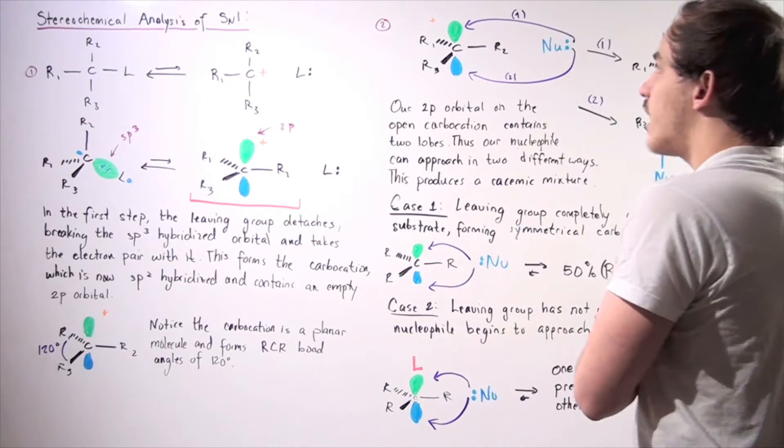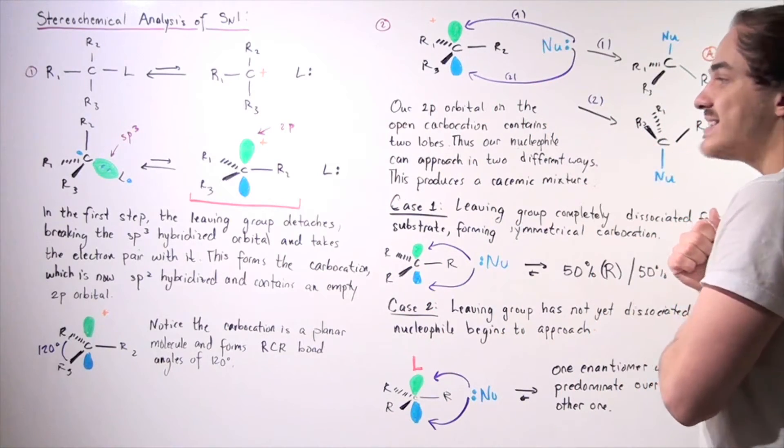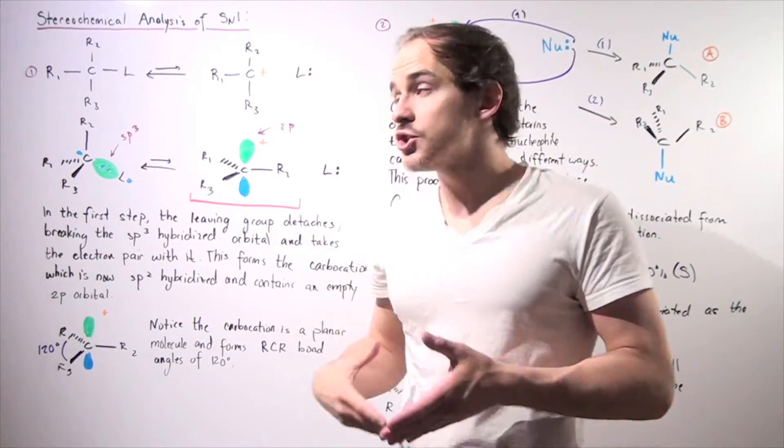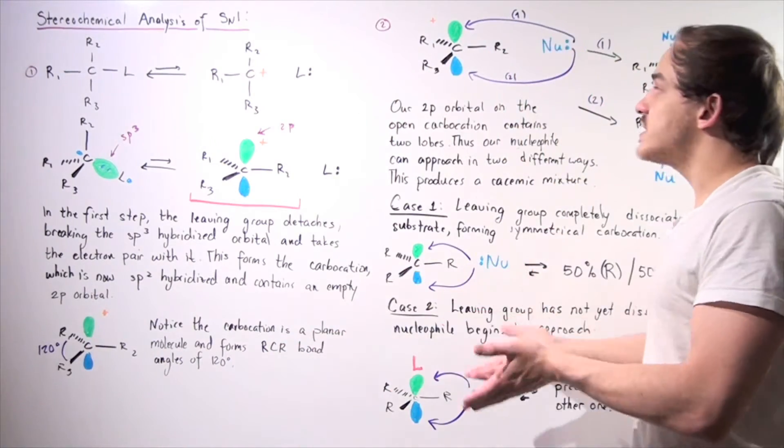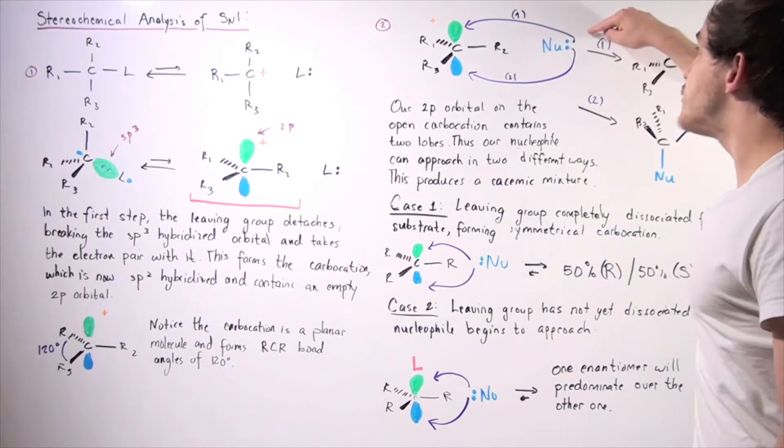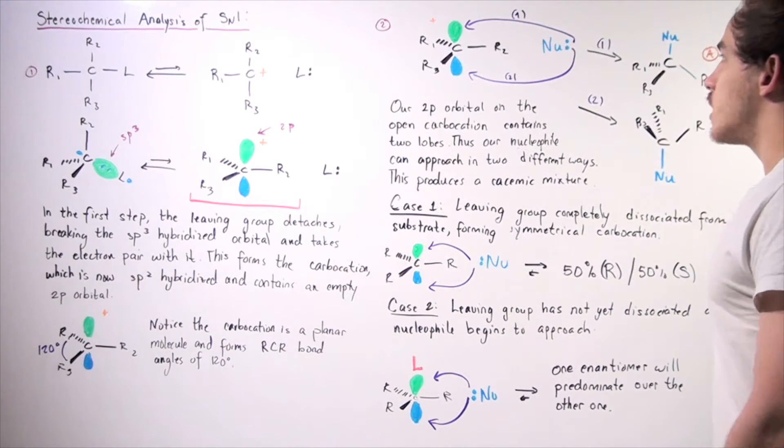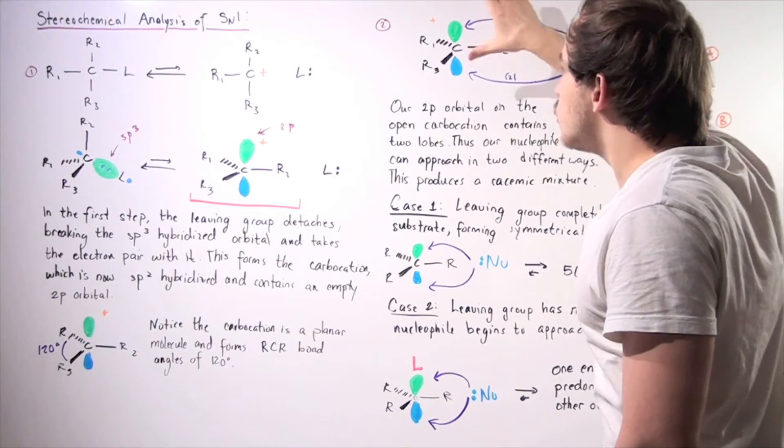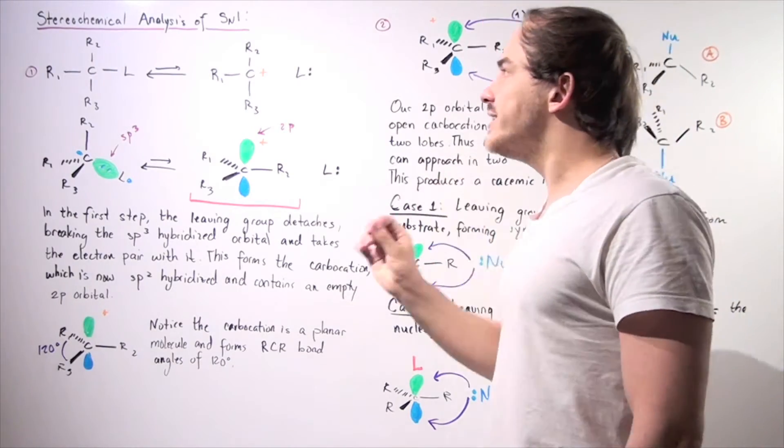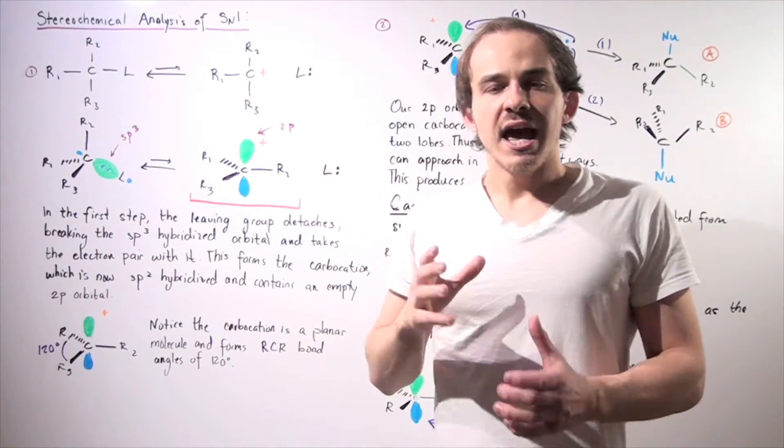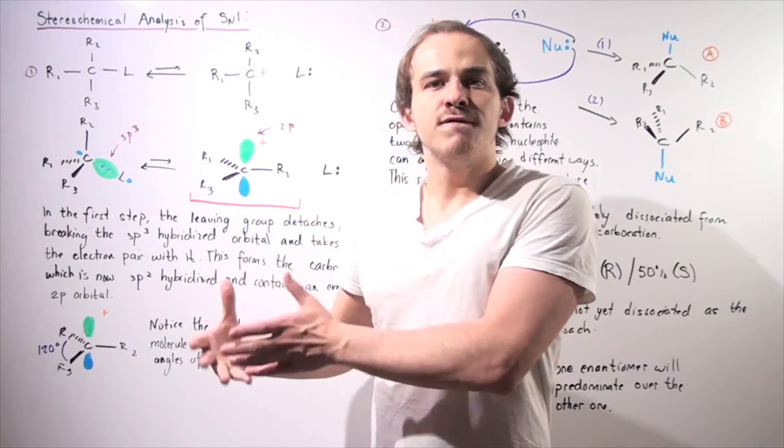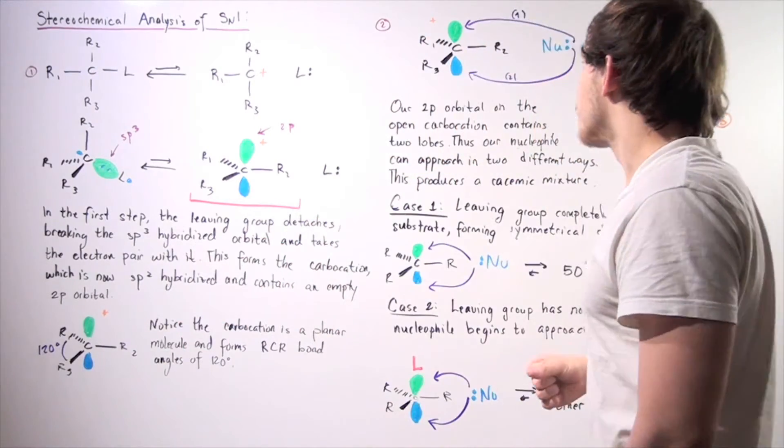So now let's go to step two. In step two, we have our nucleophile, which is usually water, but can be some other nucleophile, which uses its pair of electrons to attack the 2p orbital. Remember, we define our nucleophile as a molecule that competes for the 2p orbital.